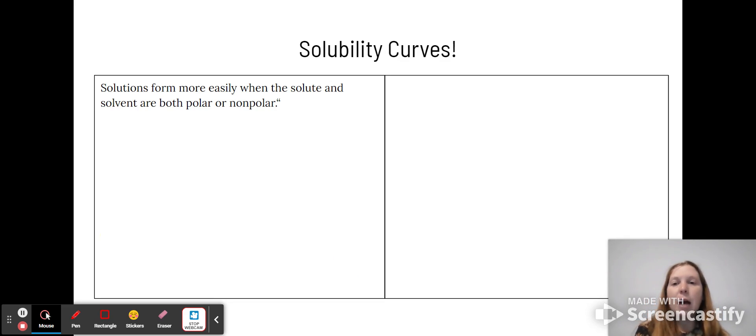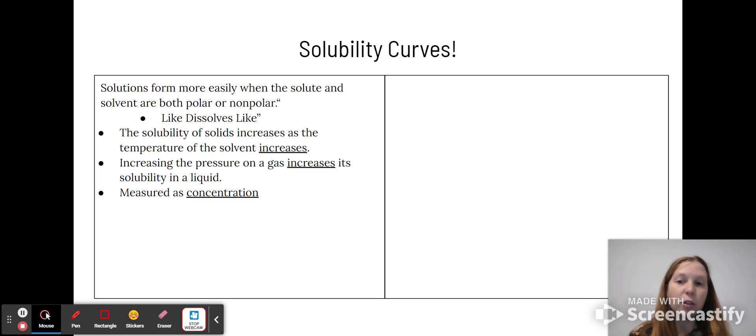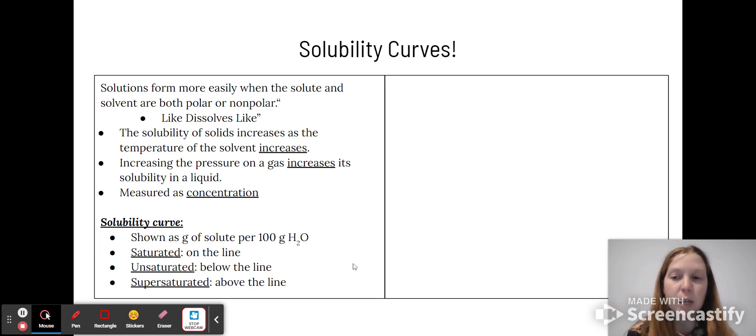Now let's talk about solubility curves. A solution will form more easily if the solute and solvent have the same polarity - if they're both polar or both non-polar. Like dissolves like. The solubility of solids increases as the temperature of the solvent increases, and increasing pressure of a gas will increase the solubility in a liquid. These are all measured in concentration on a solubility curve, shown as grams of solute per 100 grams of solution on the y-axis, and temperature on the x-axis. Saturated is on the line, unsaturated is below the line, and supersaturated is above the line.